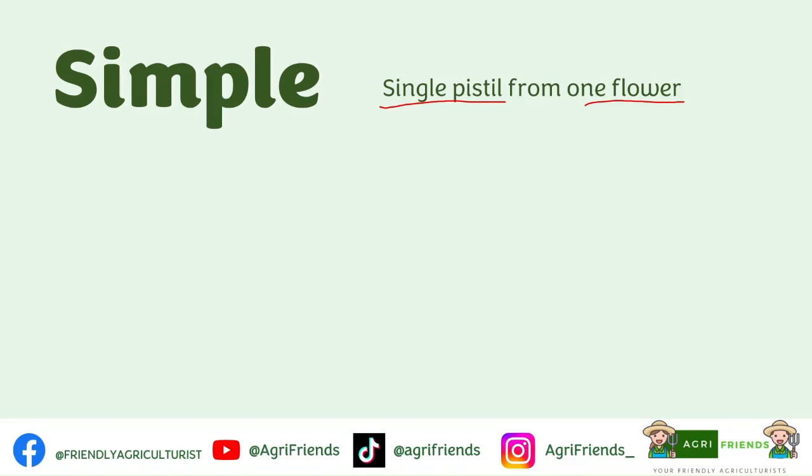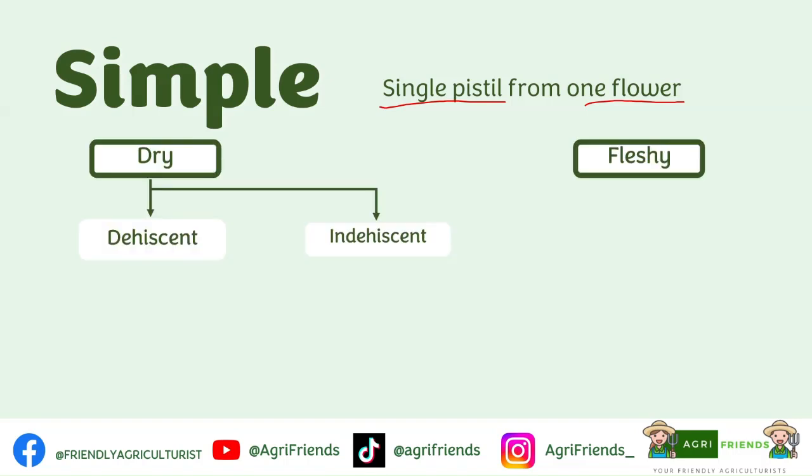Simple fruits are further categorized into dry and fleshy fruits. Dry fruits are those with low moisture content, while fleshy fruits are those with high water content. Dry fruits are further classified as dehiscent — fruits that split at maturity — and indehiscent, those that do not split at maturity.